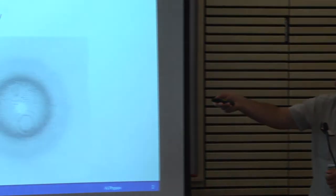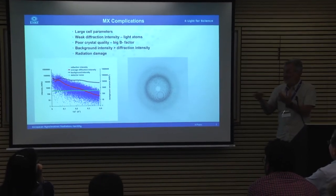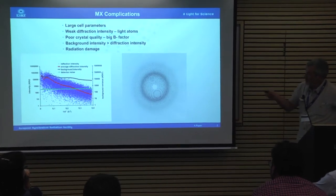We usually have quite poor crystals compared to, say, sodium chloride. As an indicator of crystal quality we use the so-called B-factor — some measure of how well the crystal is constructed. Additionally, background intensity coming from the crystal itself is usually larger than the diffraction intensity. And the last, very important reason is radiation damage — which is why we use cryotemperature for data collection to reduce radiation damage effects.